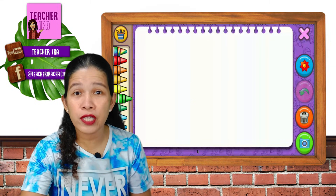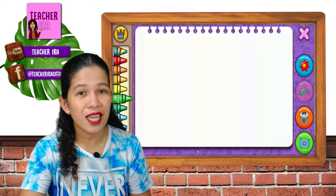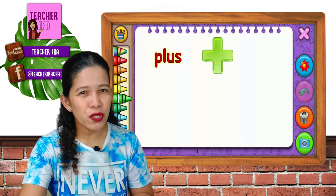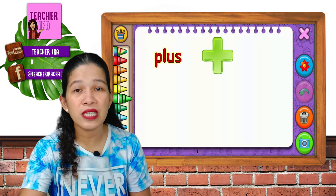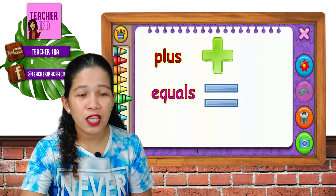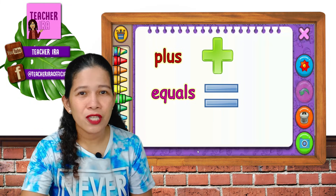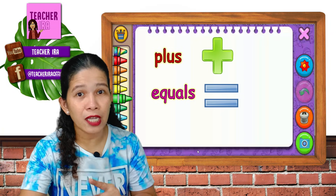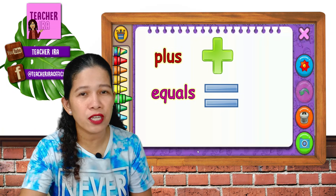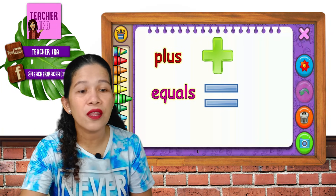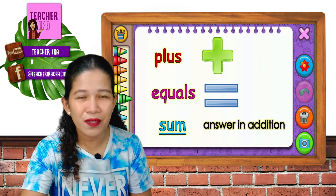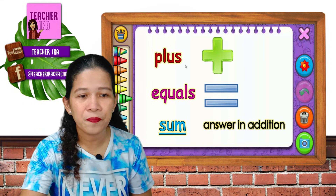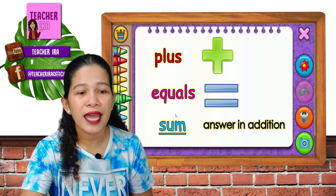Now, these are the different symbols that we will use in addition. This is plus — when you see this cross, you say plus. This is equals — this is the symbol for equals. That means after that, you will have the answer in addition, which is called the sum. Again, let's name them: plus, equals, and sum.